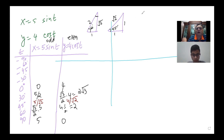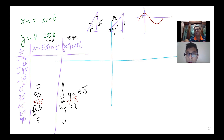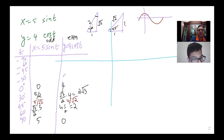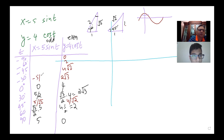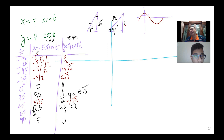That's one side done. Because cosine is even, those values are also positive and exactly the same for negative T, so we can repeat them. For sine, it is an odd function — so for negative T, the x values become negative: −5/2, −5/√2, and −5√3/2, down to −5.